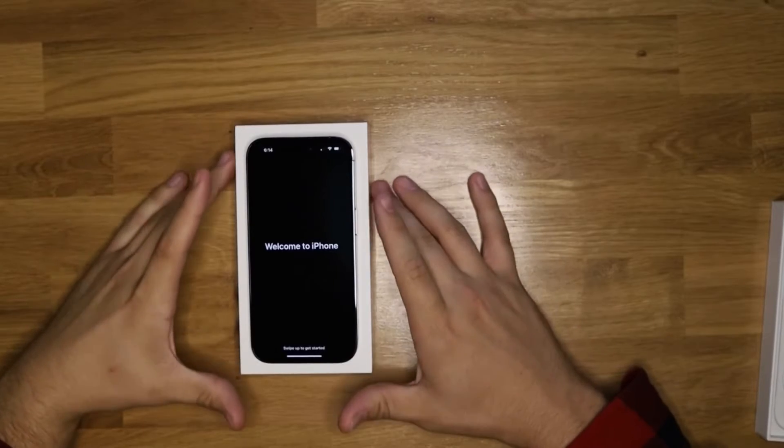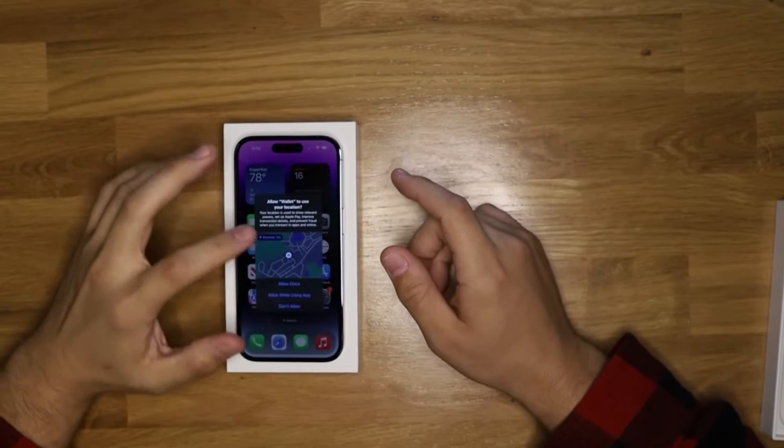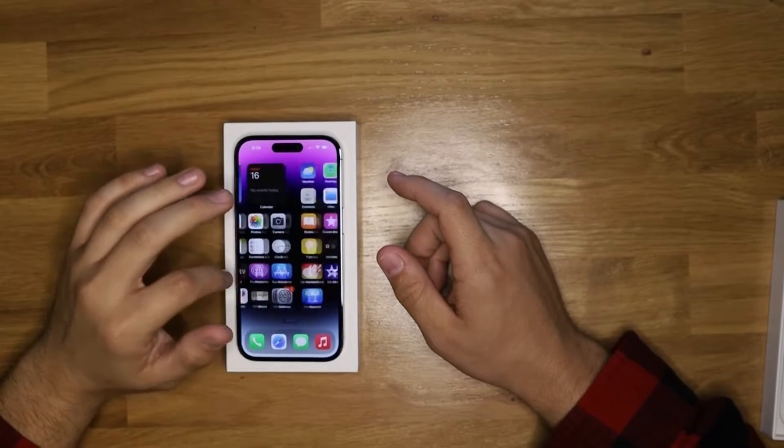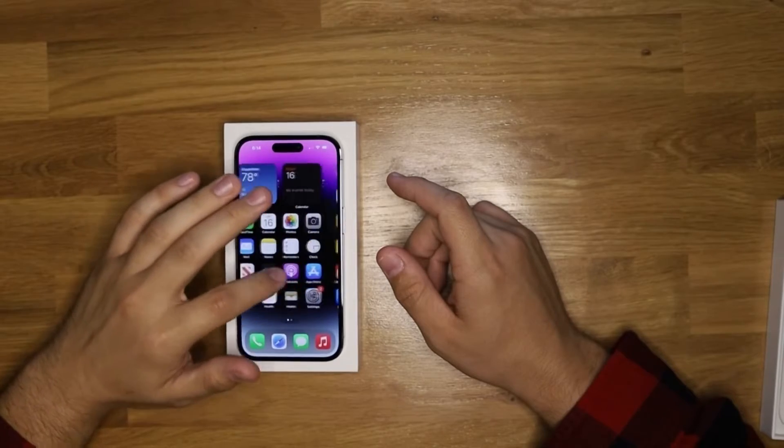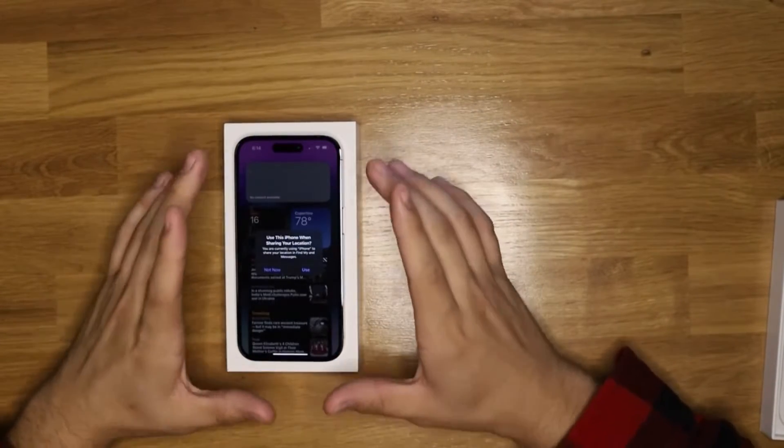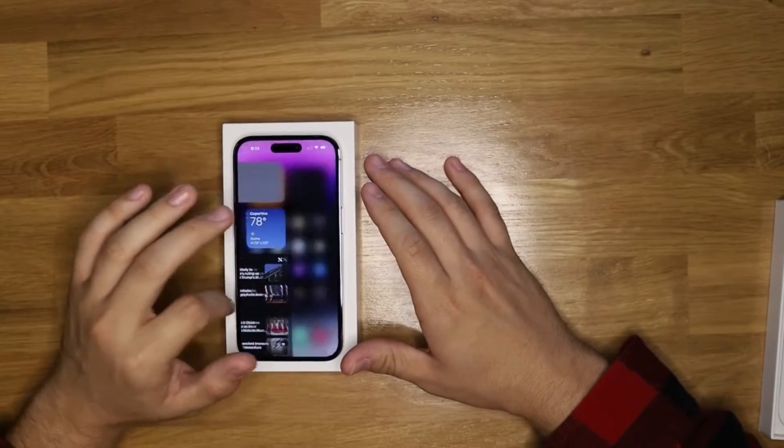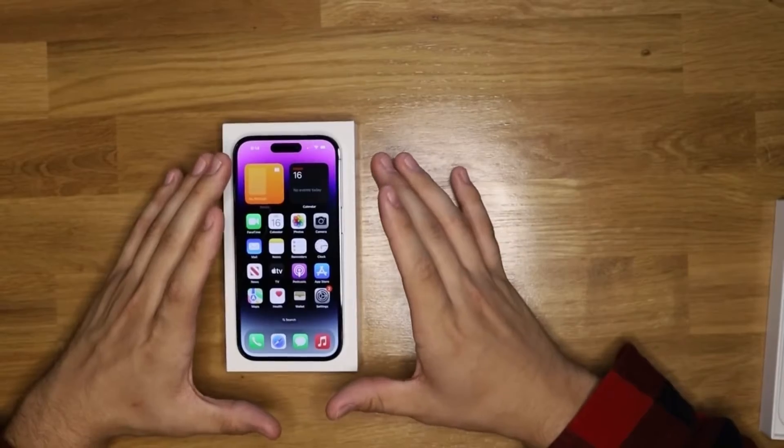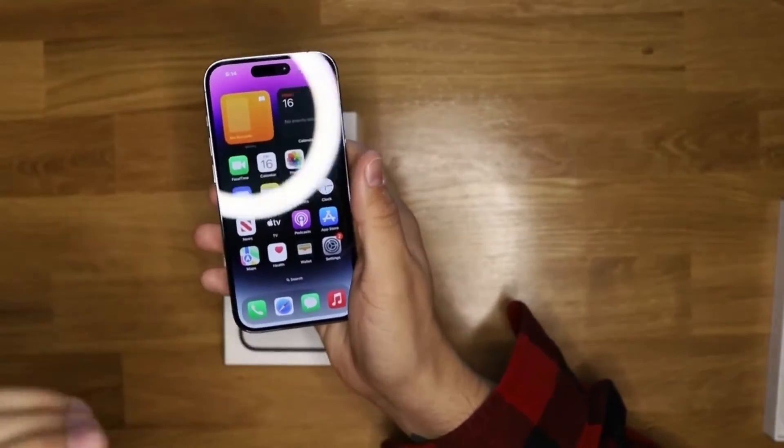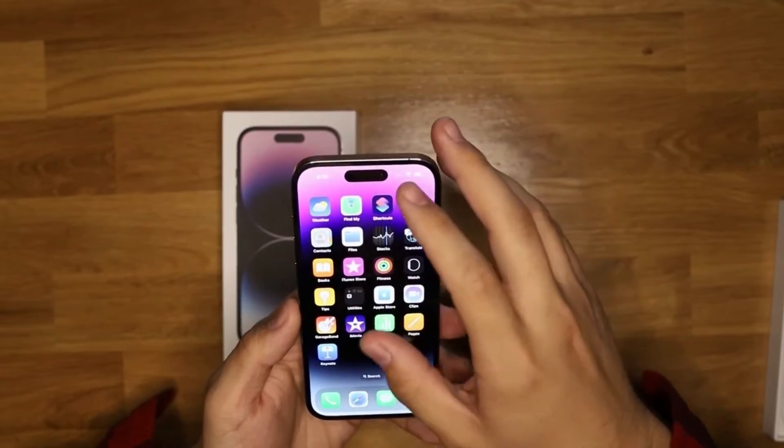Alright, so finally we're back. This took a little bit longer than I thought. It does have a 120 hertz refresh rate, so if you're going from an iPhone 13 Pro, you're not really gonna notice much of a difference in the screen movement. But if you're going from any phone prior to that, it's gonna feel so much better. I like the dynamic island, and it does have an always-on display, which is something really cool that I like.